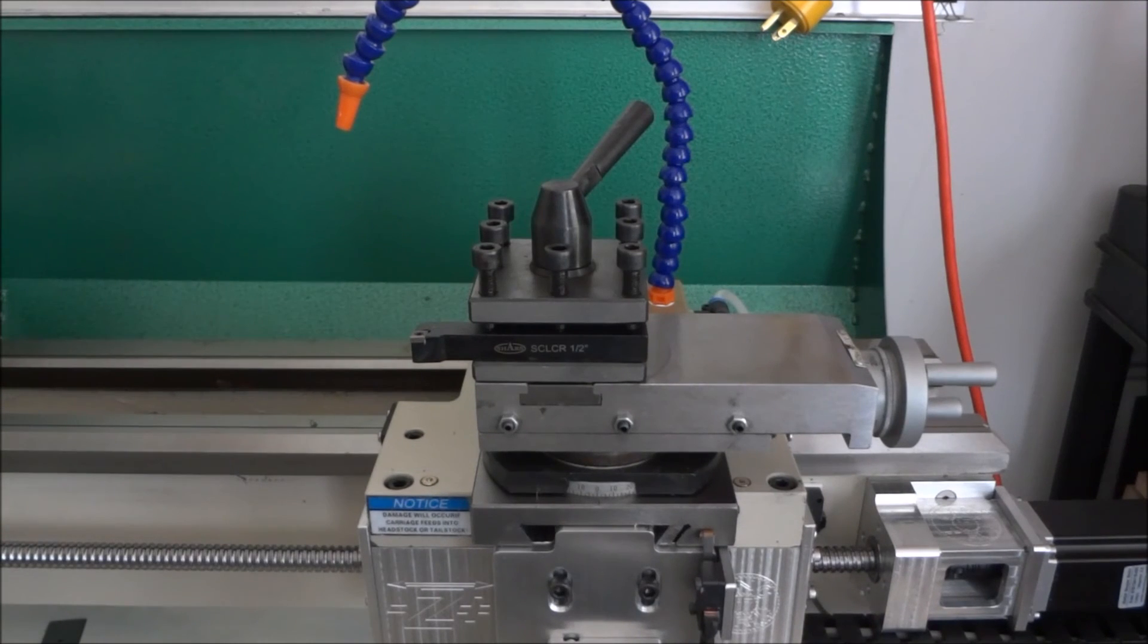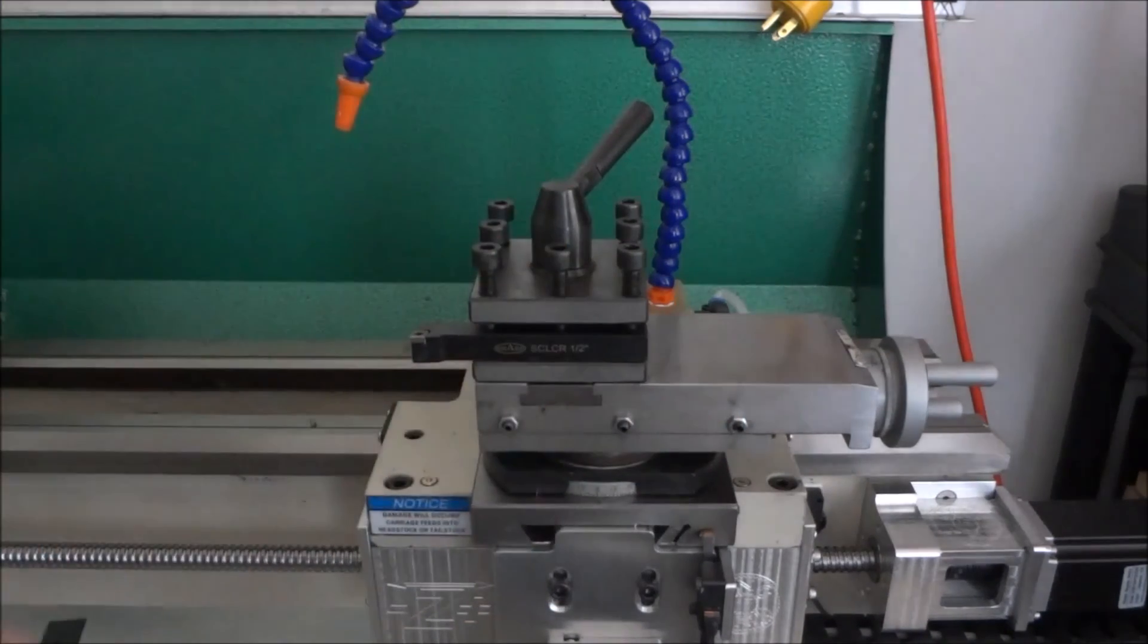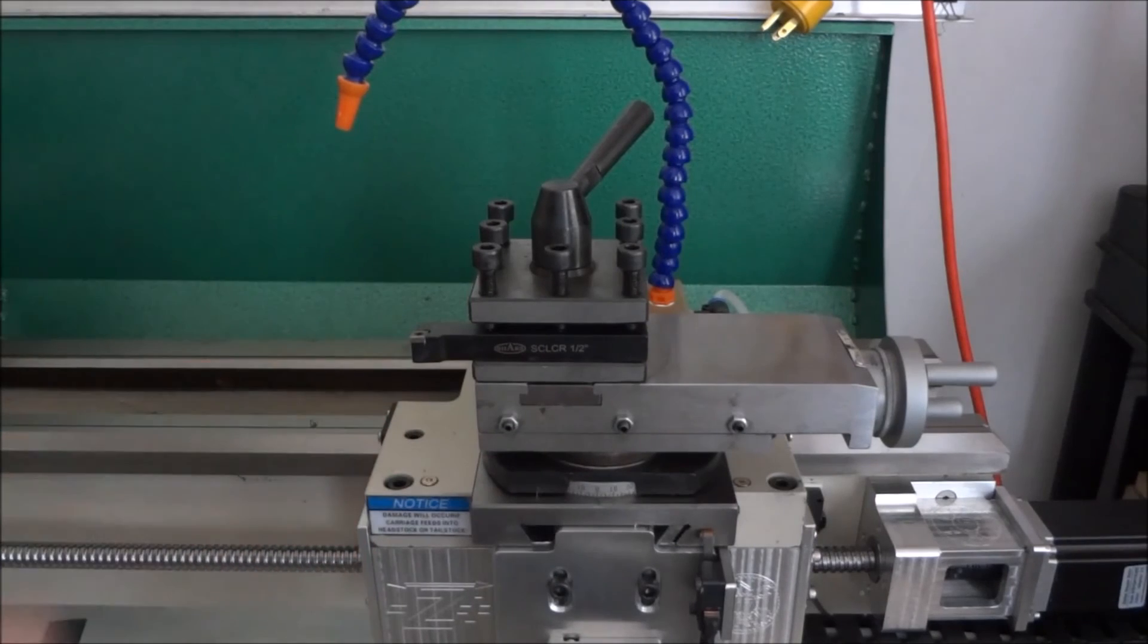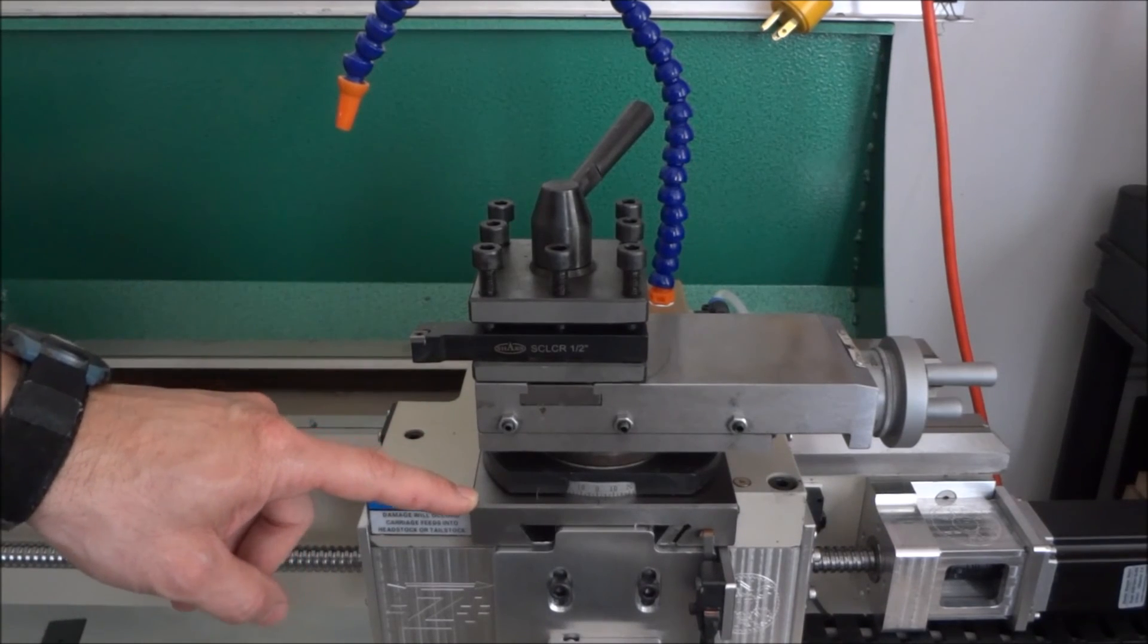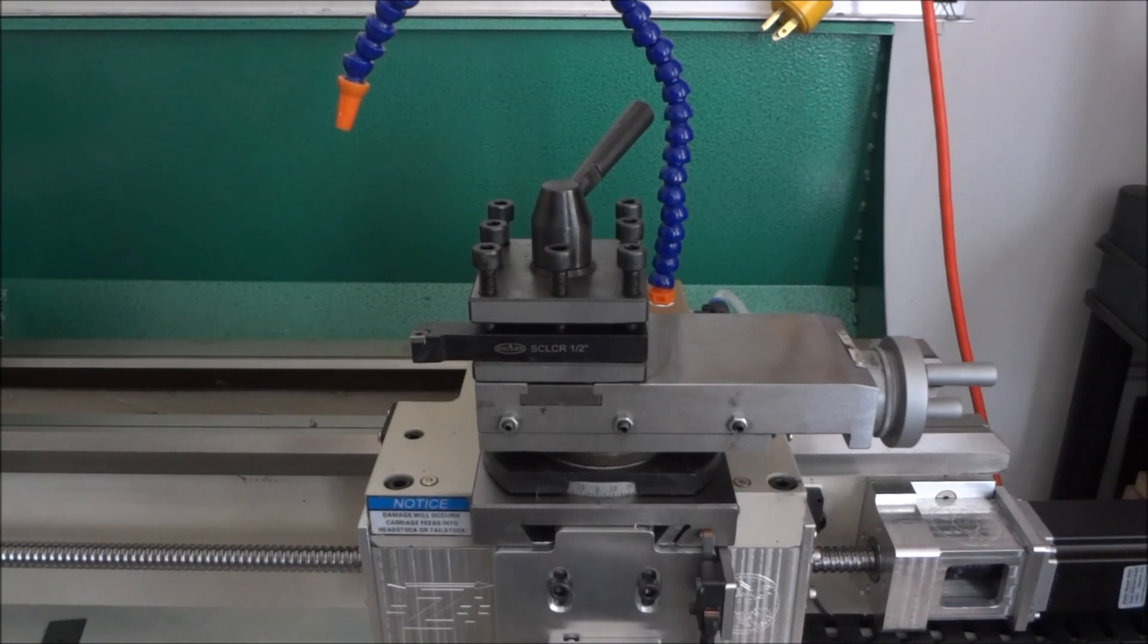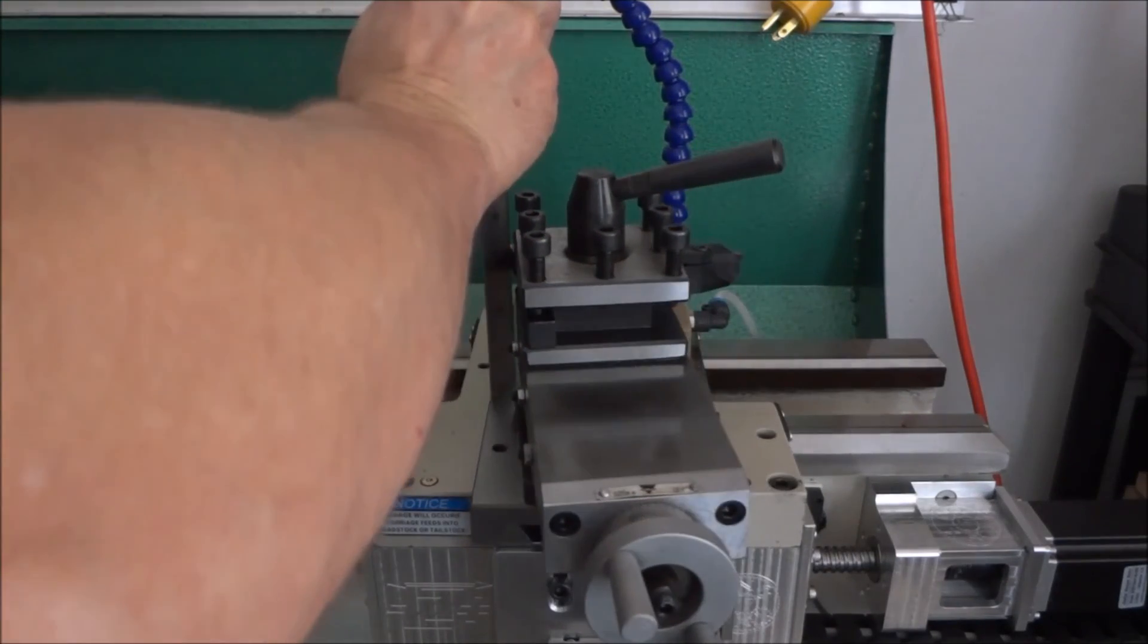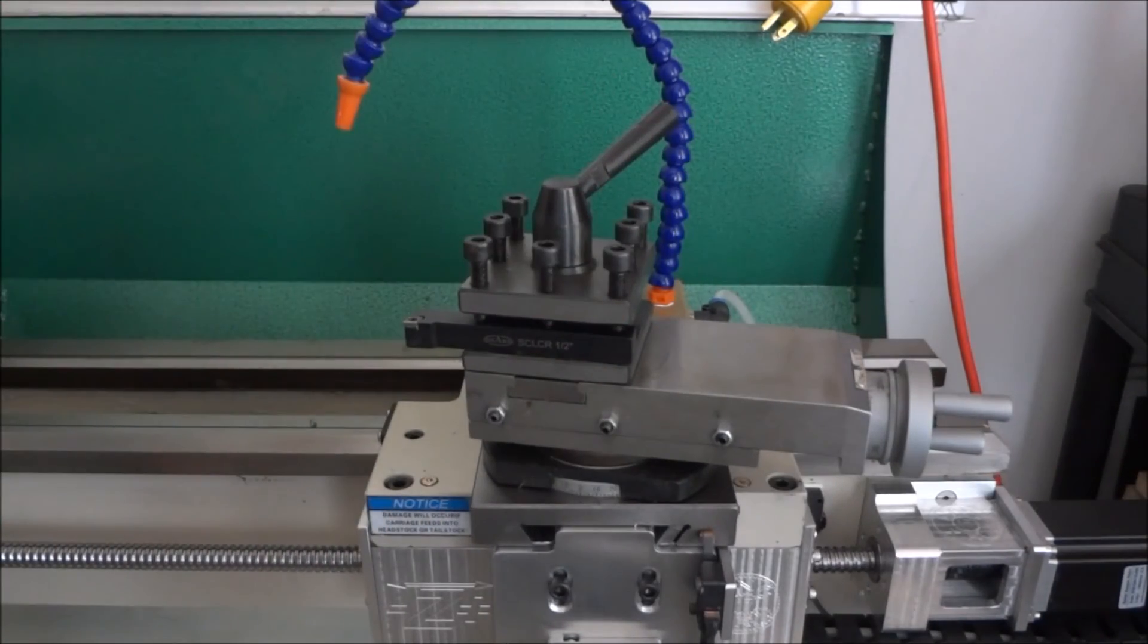For the four-way tool post compound rest, I wanted to just replace it basically and put a solid steel riser. So I had to figure out the distance between the top of the compound and the center line of the chuck or the top of the tool. Once I did that, I came up with about two and nine-sixteenths.